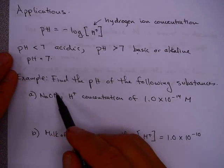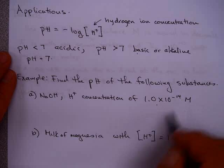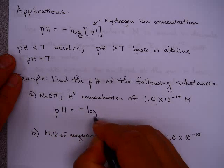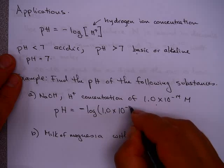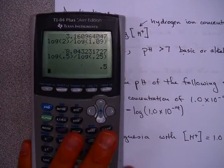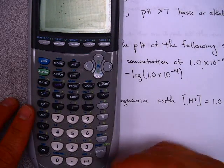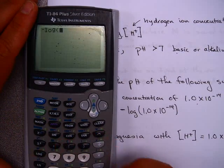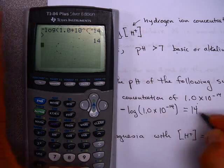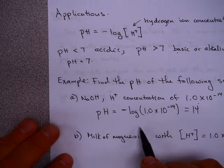Let's use the pH equation to solve some problems. Find the pH of NaOH, where the hydrogen ion concentration is 1.00 × 10⁻¹⁴ moles. We compute pH = −log(1.0 × 10⁻¹⁴). Using the calculator, that gives 14. Since 14 is greater than 7, this substance is very basic. For milk of magnesia, with hydrogen ion concentration 1.0 × 10⁻¹⁰, pH = −log(1.0 × 10⁻¹⁰) = 10, which is also greater than 7 and therefore basic.